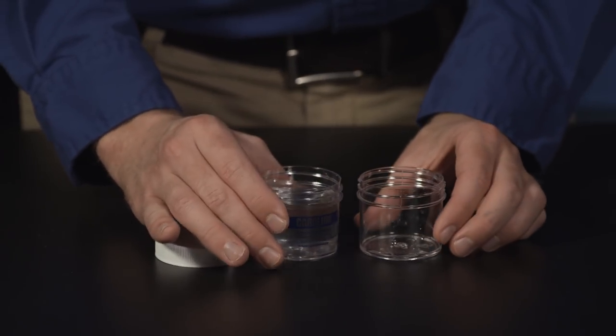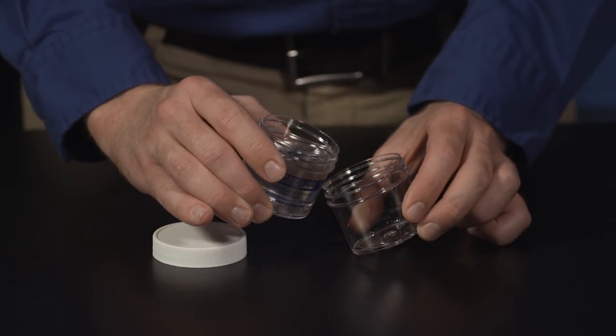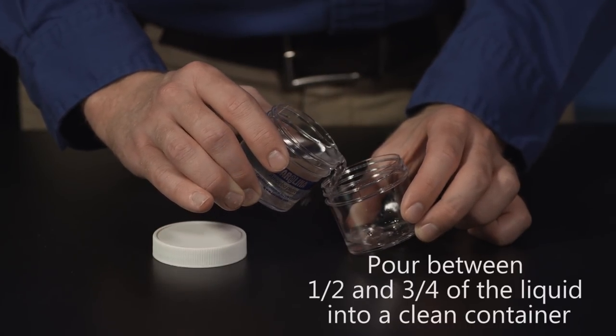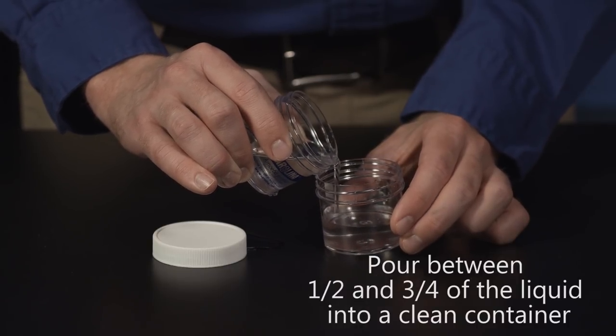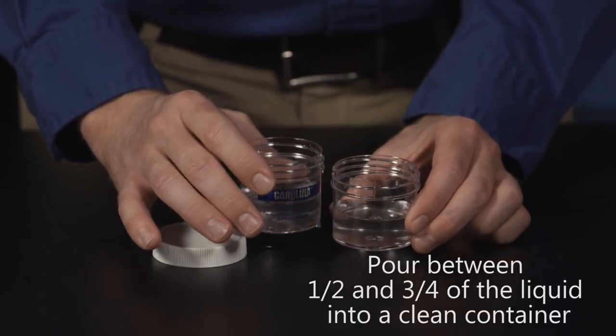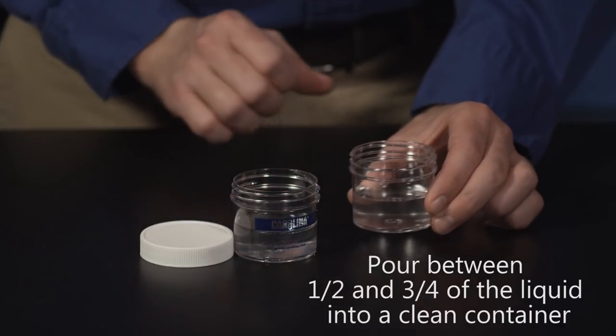After the culture has sat, pour between one-half and three-fourths of the liquid from the culture jar into another clean, detergent-free vessel. Some amoeba may be in the poured-off liquid. However, most of the amoeba will remain in the culture jar.